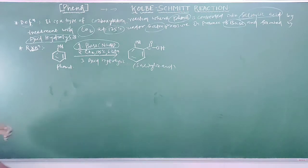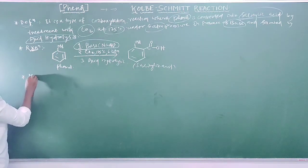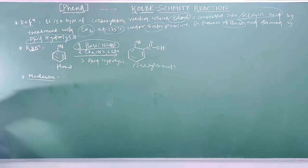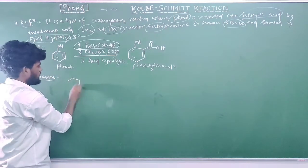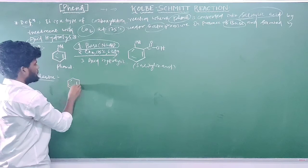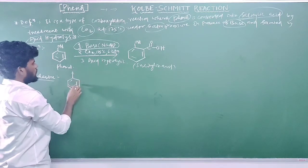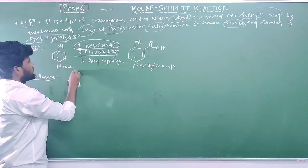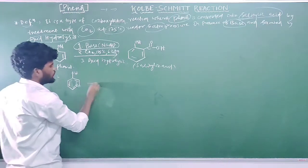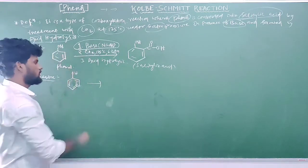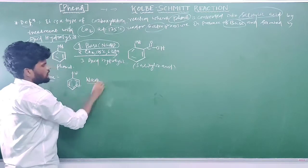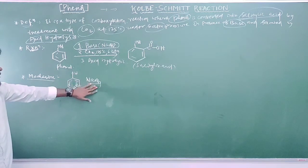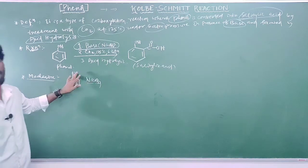Now the important part is the mechanism. Take phenol as the starting material. To phenol, we add a base — sodium hydroxide. The primary role of the base is to abstract the acidic hydrogen on the hydroxyl group. The OH minus from sodium hydroxide takes this hydrogen.